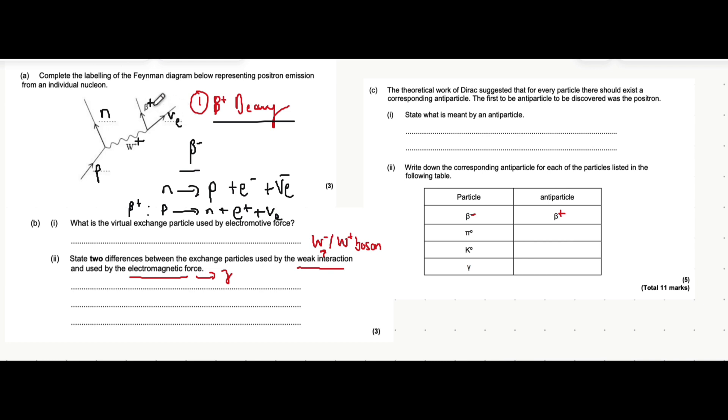And the reason for that is that electron number can be conserved because this has an electron number of minus one, this has an electron number of plus one, so they add up to zero, which is the same as the electron number on the left-hand side of the interaction.